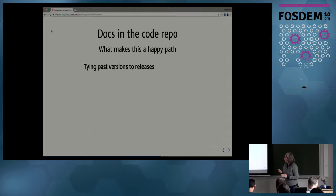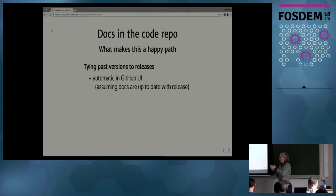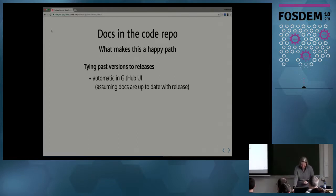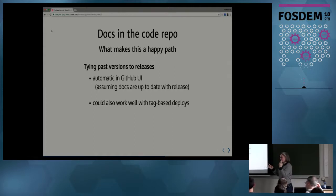Another benefit is that you can tie past versions to releases really easily. In the GitHub UI you can choose a branch or a tag and browse the repo at any previous version tag. If your docs are in the repo with the code, you go to that version tag and you're seeing the version of docs that goes with that version of the code. It could also work well with tag-based deploys — automatically getting a deploy when you push a tag — so that each tagged version has its own deployed site.